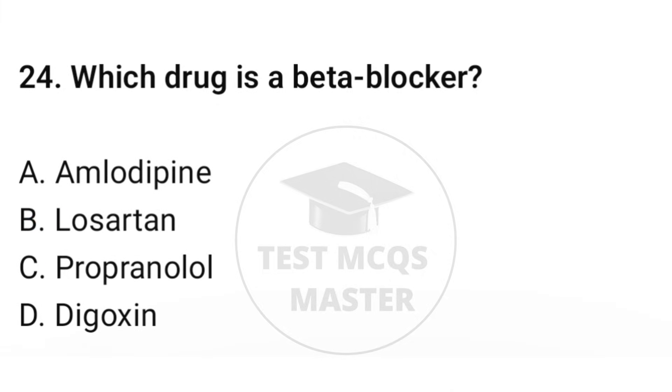Question number twenty-four: which drug is a beta blocker? The correct option is C: Propranolol.